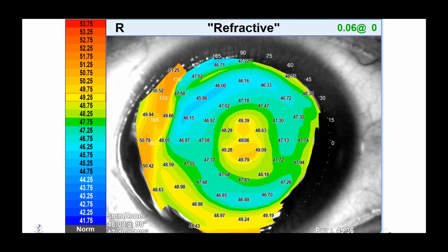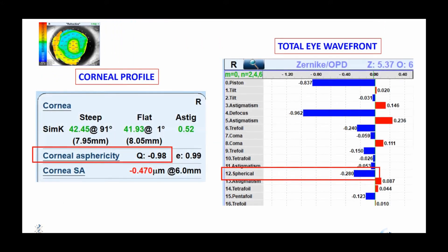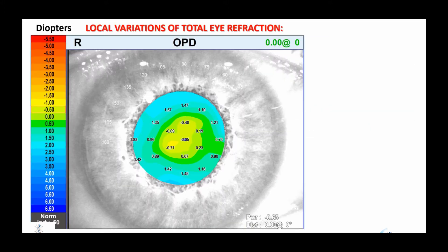The refractive corneal power map represents the vergence of the local optical power of the anterior cornea. While we observe a large gradient of curvature between the center and the edges, and the corneal asphericity is prolate, this corneal surface generates a high rate of negative ocular spherical aberration — which can well explain the poor uncorrected near vision. We can only really answer this question by studying the total refractive power map of the eye, the OPD map provided by the OPD scan instrument.